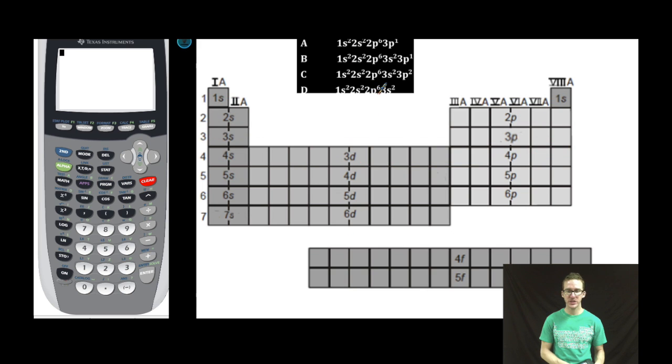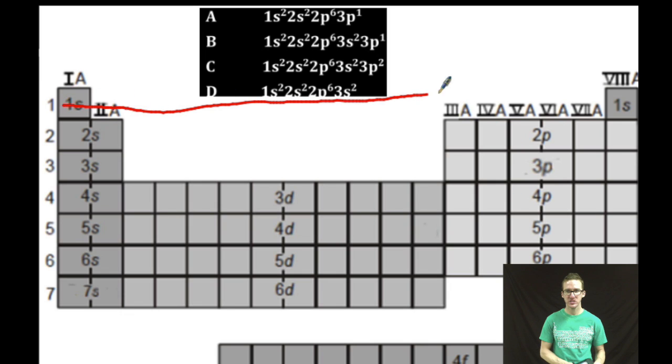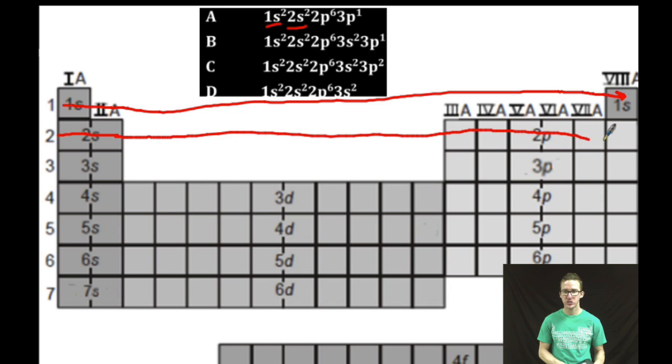So as I look at my configurations and I try to determine which one is the excited state, let's start with answer choice A. 1s2, looking ground state so far. 2s2, still looking ground state. 2p6, 3... Oh my goodness, it's not in the 3s. Again, as you think about this, if this were a ground state configuration, the next electron to fill after the 2p would be the 3s. So I'm thinking, this is my right answer.